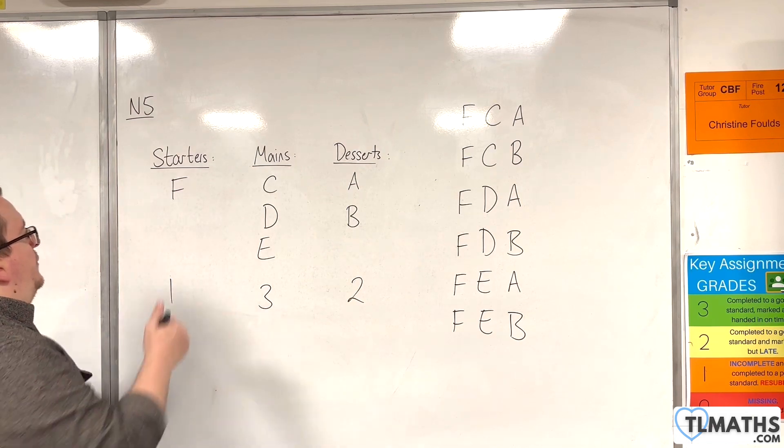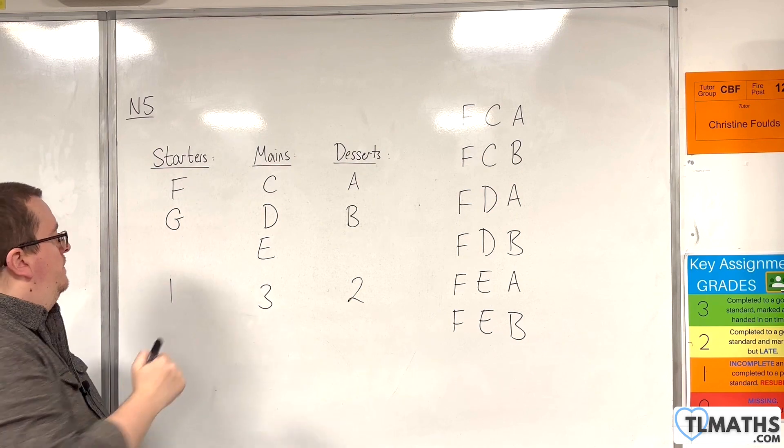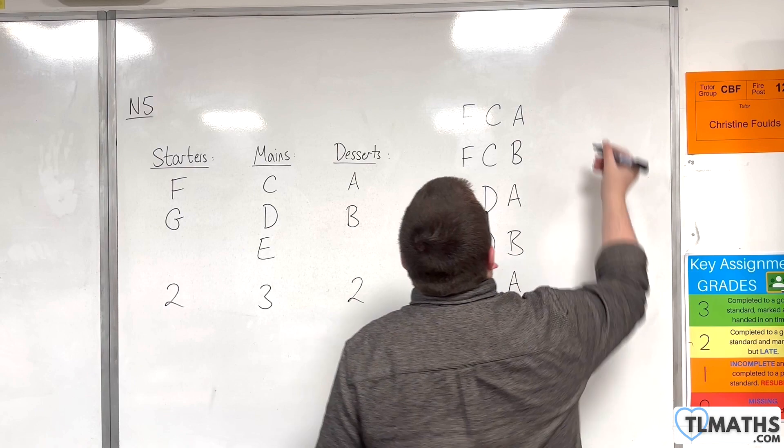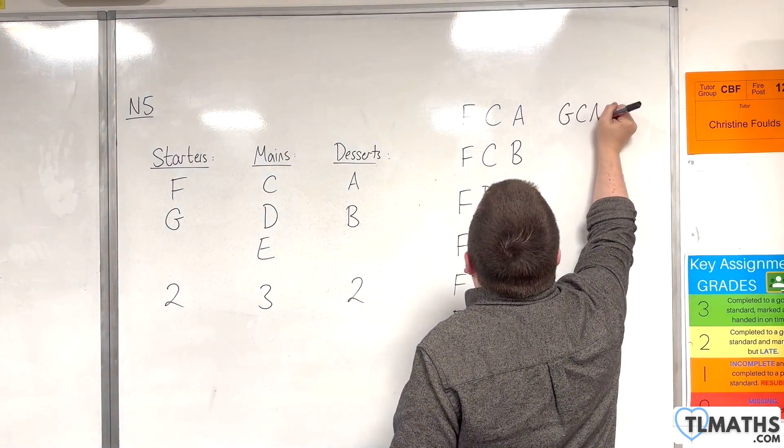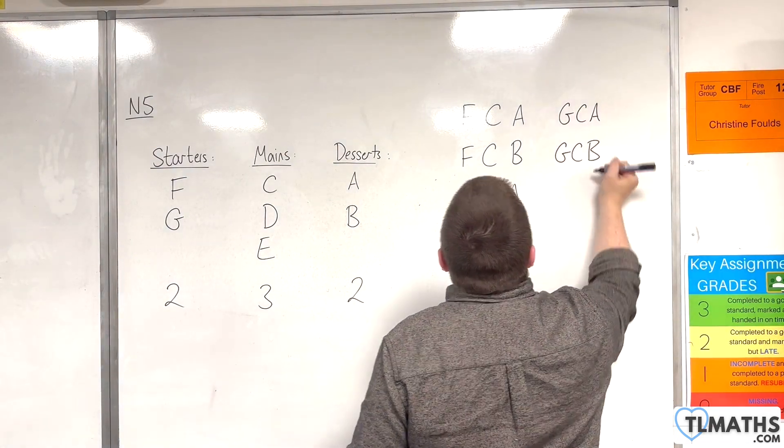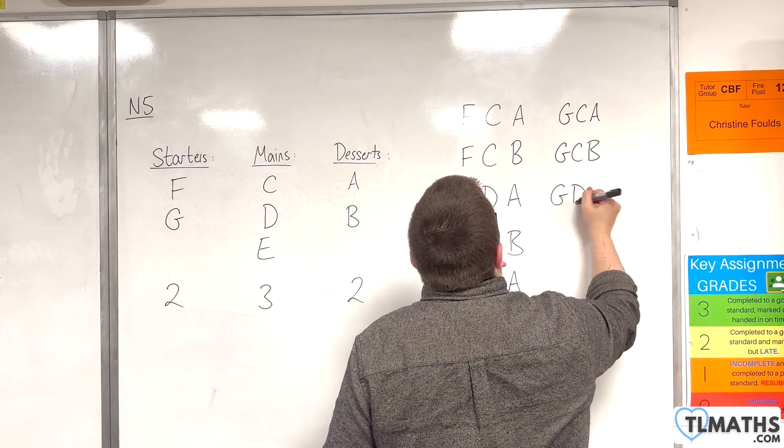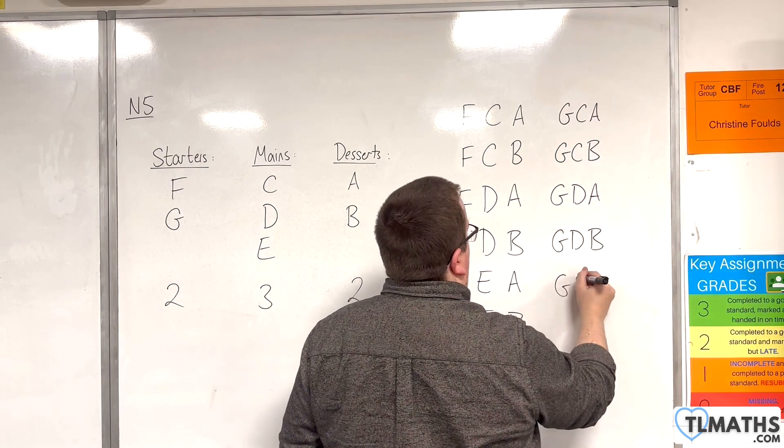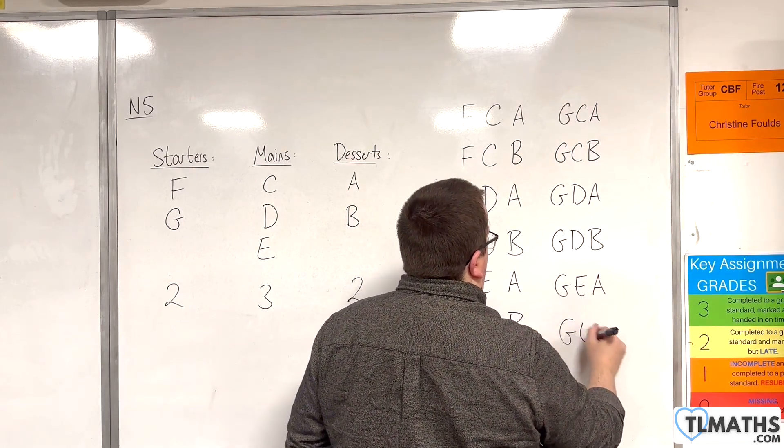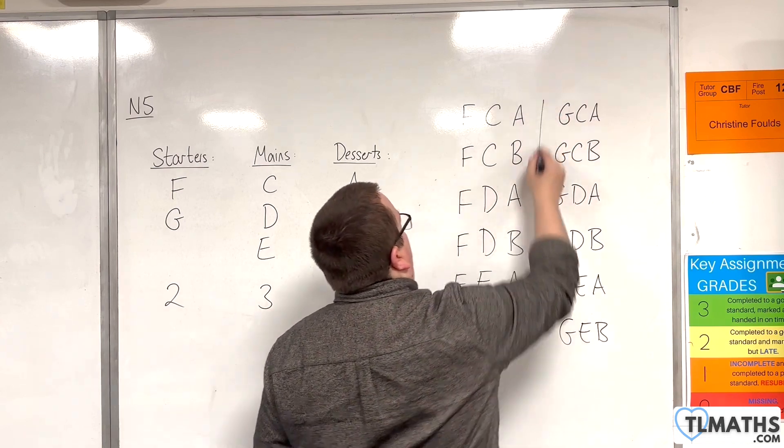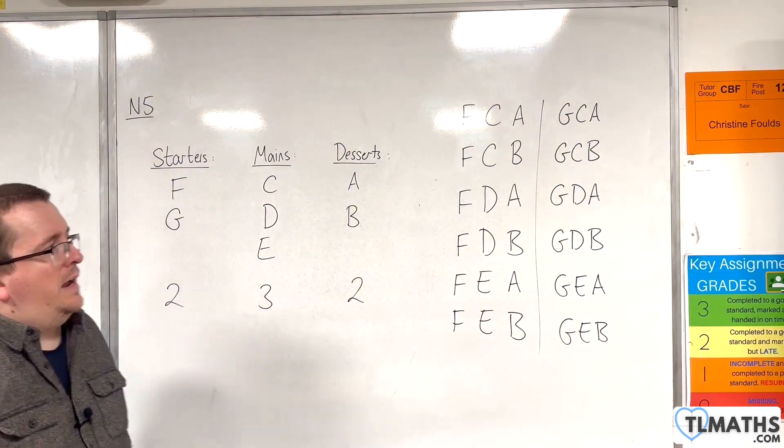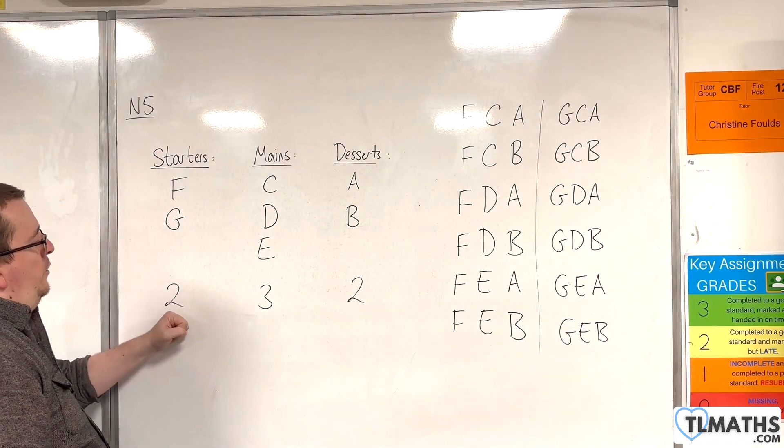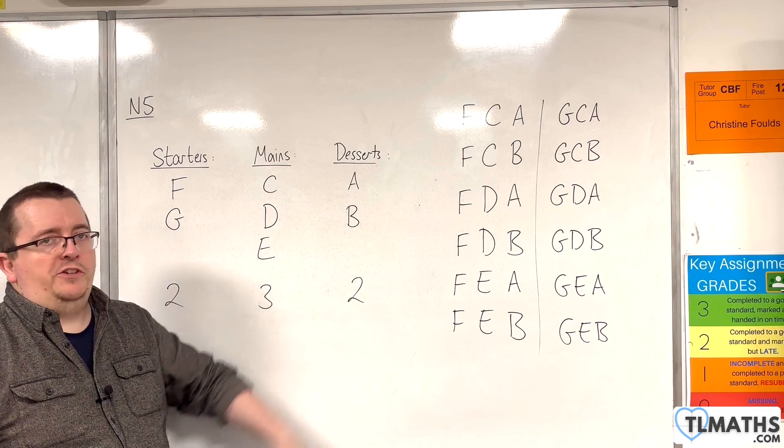But, if we add in another starter, let's call it G, we now have two starters. So, we would have G, then C, then A. G, then C, then B. G, then D, then A. G, then D, then B. G, then E, then A. G, then E, then B. So, we would now have 12 possible options here. Two times three times two is 12.